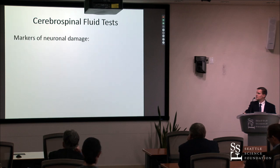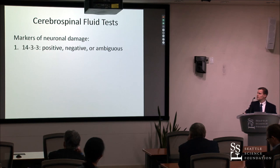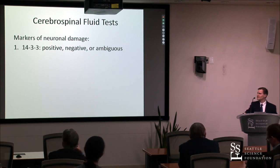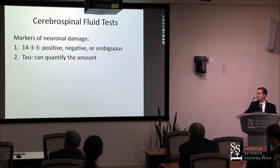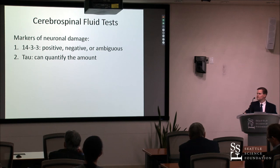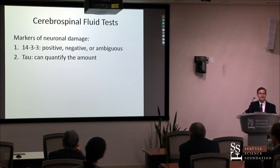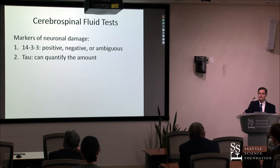We do three CSF tests at the center. Two are markers of neuronal injury: 14-3-3, reported as positive, negative, or ambiguous, and tau, which is a little more helpful because you can quantify it — the higher the number, the more likely prion disease. The problem is these tests aren't very specific; they'll be positive with anything causing rapid neuronal injury — seizures, head trauma, transverse myelitis, MS. A normal tau is 200 to 300; Alzheimer's or FTD might give 300 to 400; in CJD it's usually in the thousands — but that can also be seen with seizures.